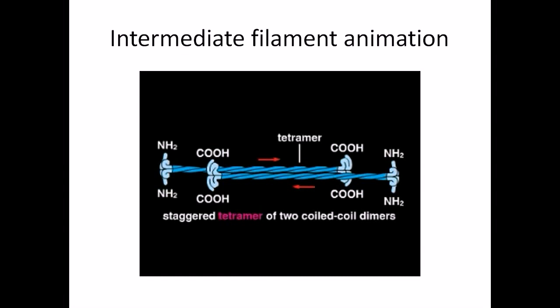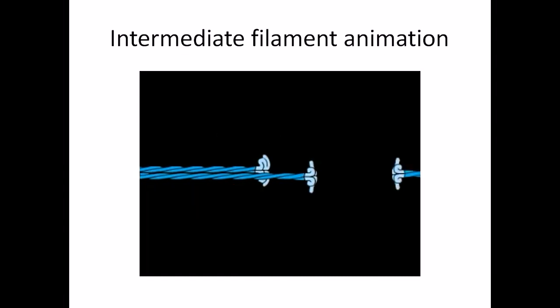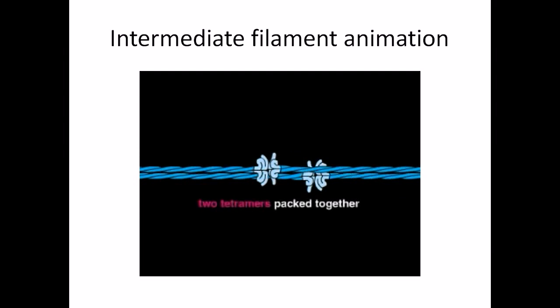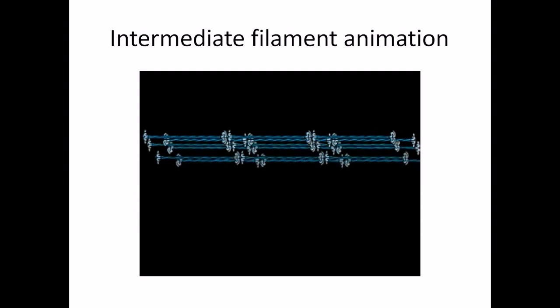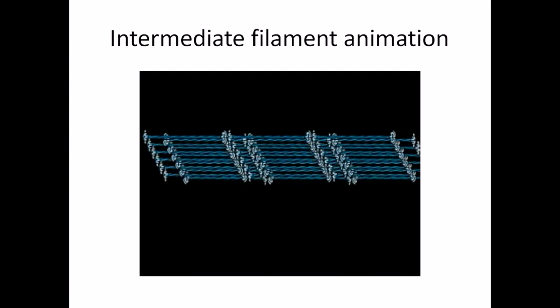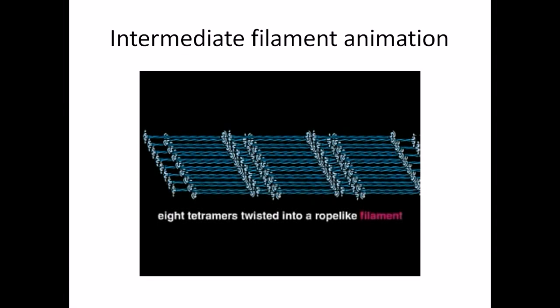Tetramers then link end-to-end, thus building up one strand of an intermediate filament. A total of eight strands stacked together and twist around each other to create the intermediate filament. This stacking provides the extensive lateral contacts between the strands that give the filament its remarkable mechanical strength.